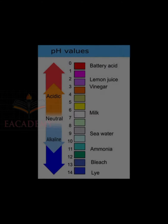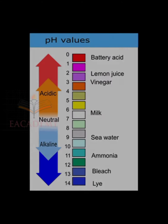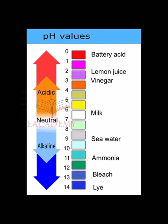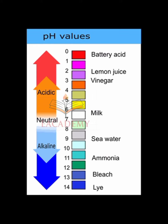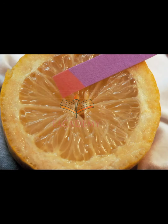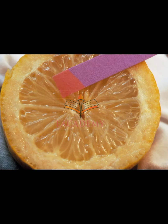Substances with a pH greater than 7 up to 14 are considered bases. Chemicals with a pH lower than 7 down to 0 are considered acids. The closer the pH is to 0 or 14, the greater its acidity or basicity, respectively. Here's a list of the approximate pH of some common chemicals.